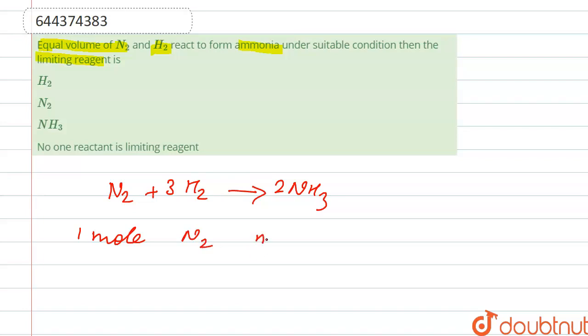Three moles of H2 to form two moles of NH3. So we are given that N2 and H2 are in equal volumes.